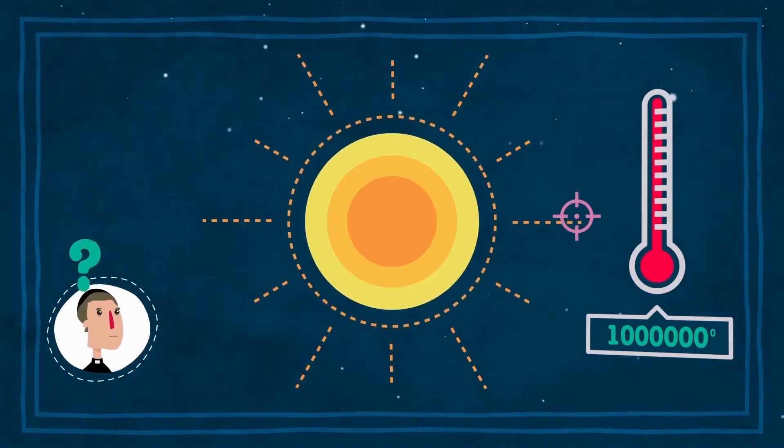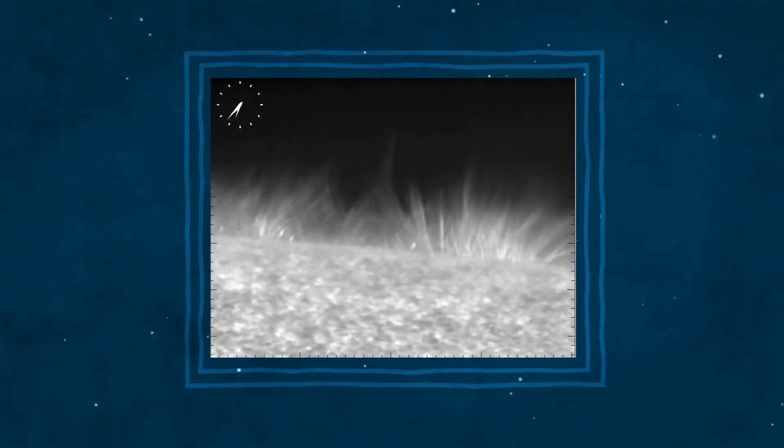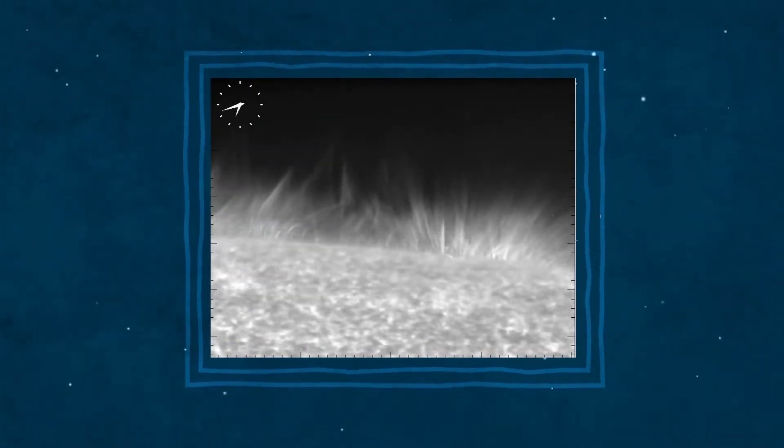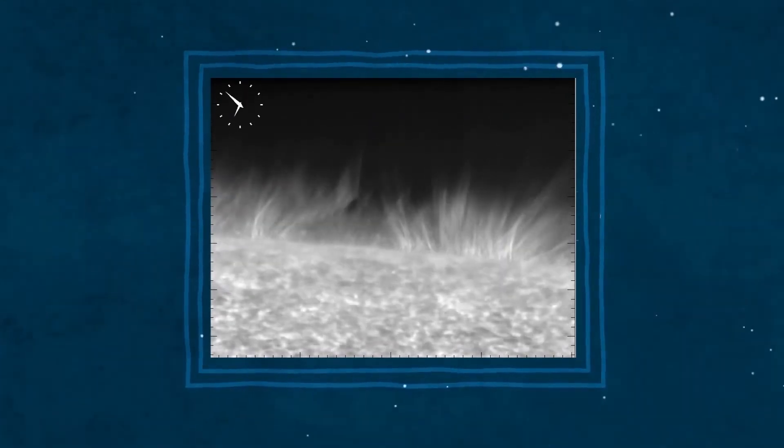Esto es un poco extraño, y aún no sabemos por qué. Sin embargo, los astrónomos sospechan que las espículas son capaces de transportar mucha energía y, como resultado, calientan la corona.